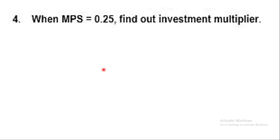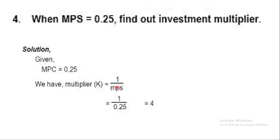Question 4: MPS (marginal propensity to save) = 0.25, find the investment multiplier. The formula is K = 1 upon (1 minus MPC). Since 1 minus MPC equals MPS, we have K = 1 upon MPS = 1 upon 0.25, and the answer is 4.